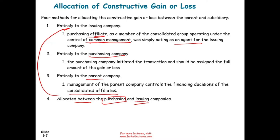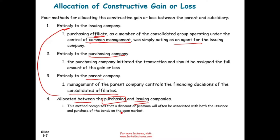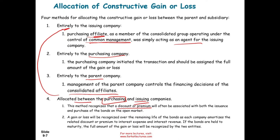Under method four, we take the gain or loss and allocate it between the two companies. This method recognizes that a discount or premium is often associated with both the issuance and the purchase on the open market. So each company deals with their own premium or discount. A gain or loss is recognized over the remaining life of the bond as each company amortizes the related discount or premium — either to interest expense for a discount, or interest revenue for a premium. If the bonds are held to maturity, the full amount of the gain or loss will be recognized by the two entities. We're going to use this method to illustrate the concept.